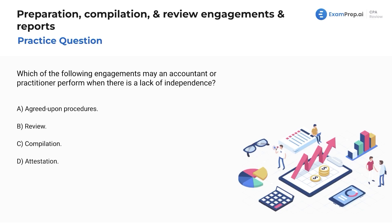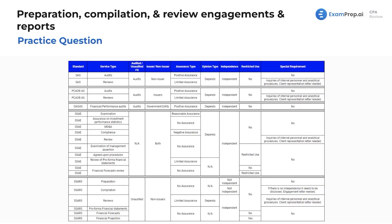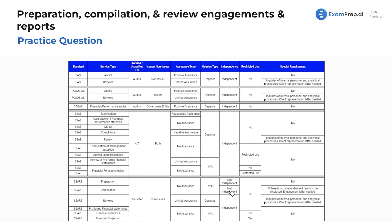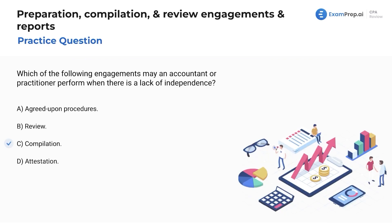Which of the following engagements may an accountant perform when there's a lack of independence? This comes down to memorization. Looking at our chart — AUP, review, compilation, attestation — compilation does not require independence. Agreed-upon procedures require independence. Review requires independence. Attestation engagements under SSAE or SSARs all require independence. The only one where you do not need independence is the compilation, because you're just putting together the financial statements for the client. Make sure you have this chart memorized — it's very important.